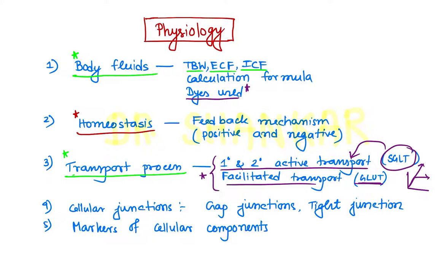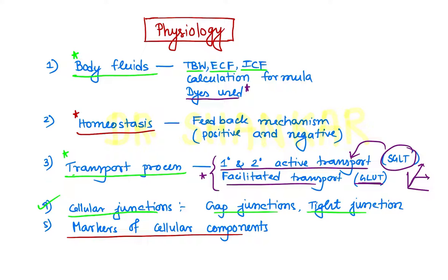Cellular junction is one of the important topics: gap junction, tight junction, macula adherens, zona adherens — their components and structure, and where they are found. This cellular junction topic is important. Next, markers of cellular components like markers of nucleus, mitochondria, Golgi apparatus, endoplasmic reticulum, etc. — you should know the markers of each of the components of the cell.